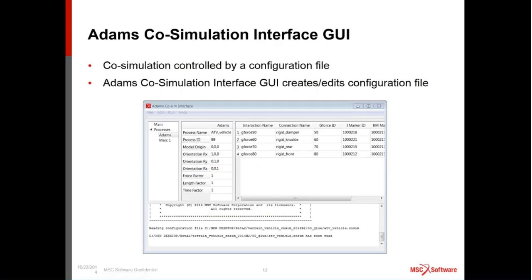There is a co-simulation interface GUI that sets up how you define these interactions. Yijin will show you how to set up these configuration files, where you define the G-force IDs that are expecting information back from MARC and the markers in ADAMS that correspond to which rigid surfaces in MARC.